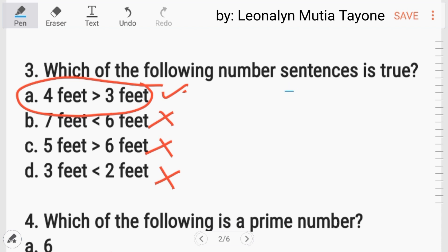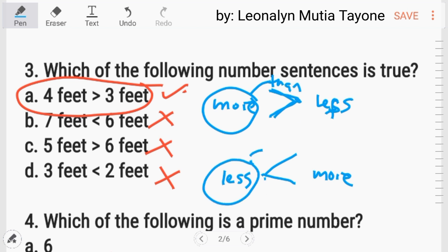May ilan sa inyo na nalilito kung ano ibig sabihin nito versus nito. Kung saan ito nakaturo, para hindi nyo makalimutan ito ha. Kung saan ito nakaturo, yan yung less. Nakaturo dito, yan yung less. So, kung ito yung less, yung saan siya nakaturo ha. So bali, ang opposite niyan ay more. Ang tawag dito, more than. Ang tawag naman ito ay less than.